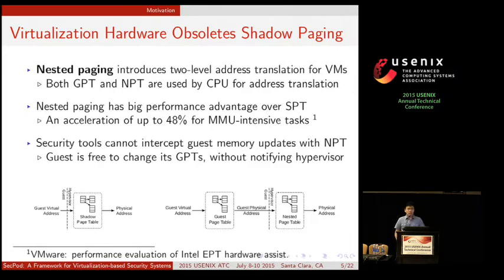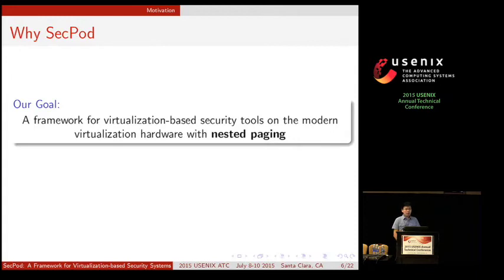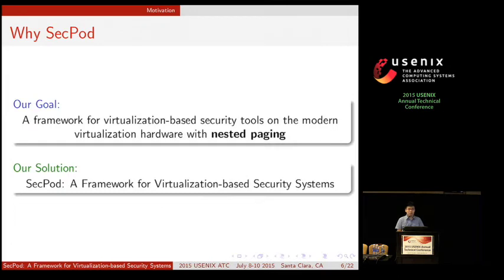But there's a problem: security tools cannot intercept guest memory updates with nested page tables, because the guest is free to change its own page table and will not notify the hypervisor. So can we build a system that enables existing virtualization-based security tools and runs these secure tools on modern virtualization hardware, especially with nested paging? That is our work: SecPod, a framework for virtualization-based security systems.